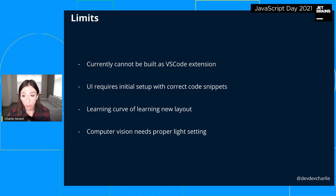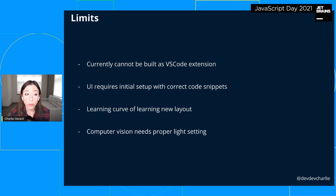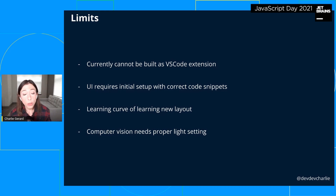Another limitation is that the UI requires an initial setup with correct code snippets. I used snippets for React code and general JavaScript expressions, but you could set up different modules for Python, Ruby, or Java — they would each need initial configuration. There's also a learning curve to learning a new layout; we're very used to typing fast on keyboards, whereas here you'd need to learn where the options are and get used to the interaction.